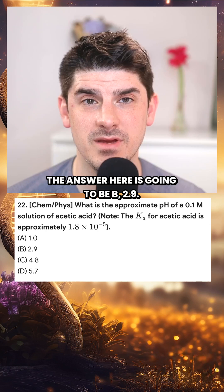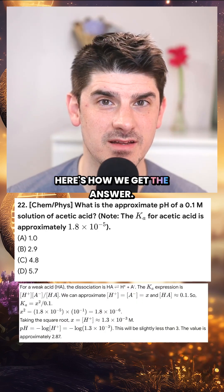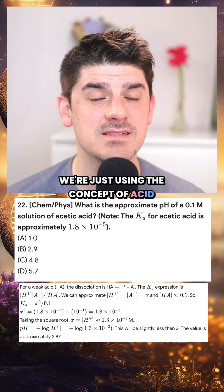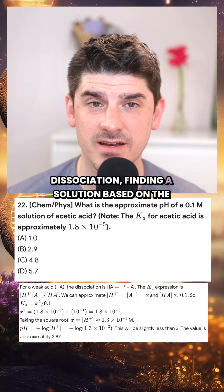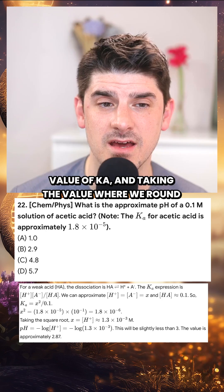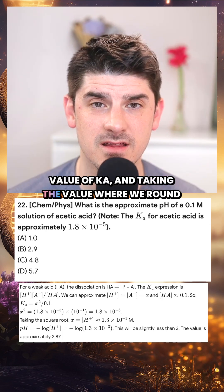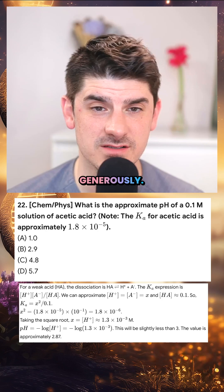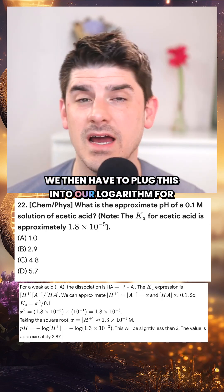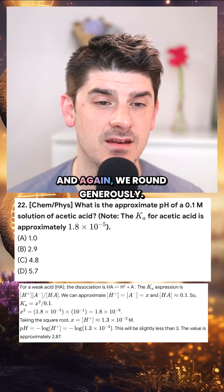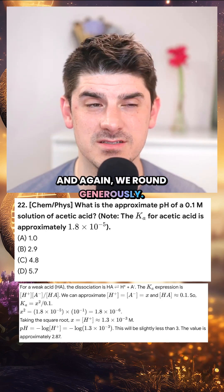The answer here is going to be B, 2.9. Here's how we get the answer. We're just using the concept of acid dissociation, finding a solution based on the value of Ka, and taking the value where we round generously. We then have to plug this into our logarithm for our pH calculator, and again, we round generously.